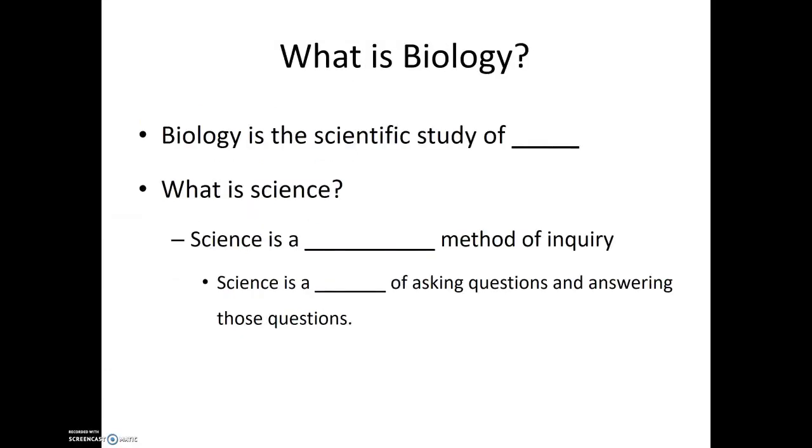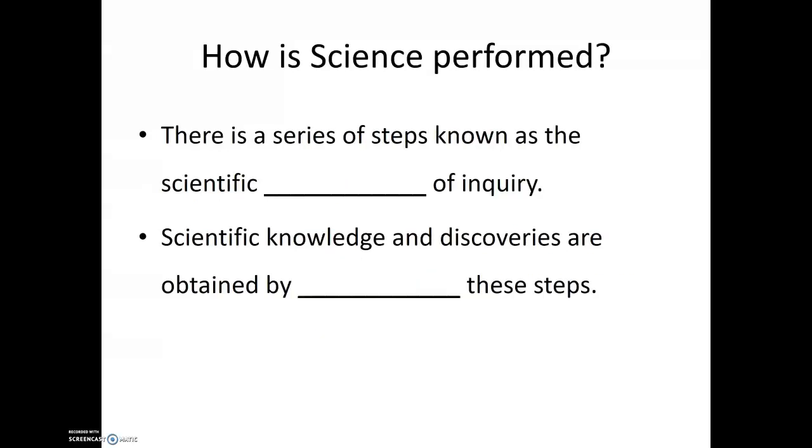So biology is the scientific study of life. And so what does it mean that biology is a science? A science is a systematic method of inquiry. What that means is that science is really a way of asking questions and then answering those questions. This is done through a series of steps known as the scientific method of inquiry. Scientific knowledge and discoveries are obtained by following these steps. And this is true for all different aspects of science. The scientific method is how we go about performing science.